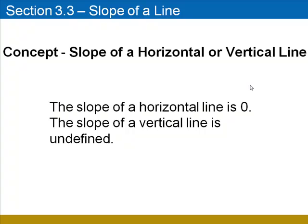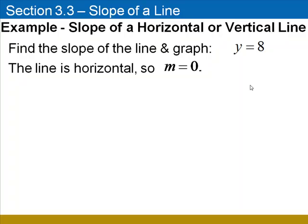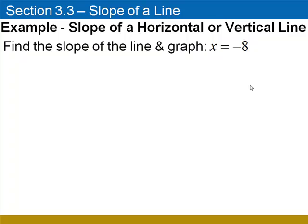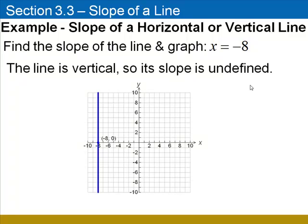The slope of a horizontal line is 0, while the slope of a vertical line is undefined. Find the slope of the line y equals 8 and graph it. Since this is a horizontal line, we know that the slope is 0. To graph the line, we plot the y-intercept at (0, 8) and draw the horizontal line that passes through it. Here's another example: find the slope of the line x equals negative 8 and graph it. This is a vertical line, so its slope is undefined. To graph the line, plot the x-intercept at (negative 8, 0) and draw the vertical line that passes through it.